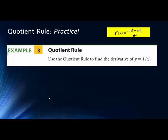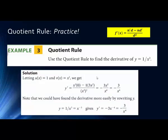Using the quotient rule on y equals 1 over x cubed: the derivative of the numerator is 0 (derivative of a constant), so the first term vanishes. We have 0 minus the derivative of the denominator (3x squared) times the numerator (1), all over x to the 6th, giving negative 3 over x to the 4th. Alternatively, rewriting 1 over x cubed as x to the negative 3 and applying the power rule gives negative 3x to the negative 4 — the same answer.